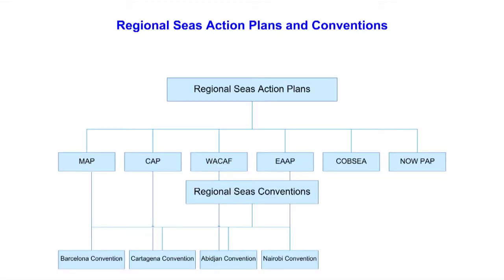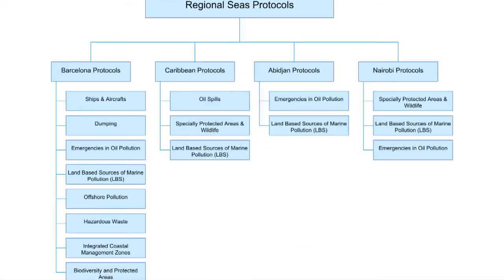Although the majority of the regional seas action plans have led to the development of an umbrella legally binding framework — in the form of conventions and implementing protocols — we have a few action plans which have remained at the state of an action plan. These are principally Southeast Asia, the Northwest Pacific, both administered by UNEP, and the South Asian Seas Action Plan administered by SACEP. Of the 13 regions, UNEP administers and manages six regional conventions plus 15 of the total 42 legally binding implementing regional seas protocols.